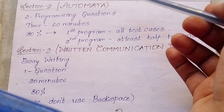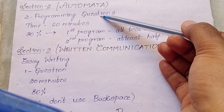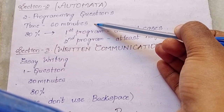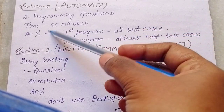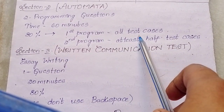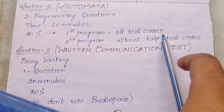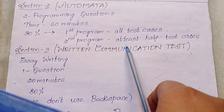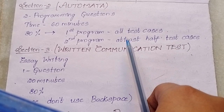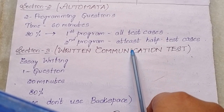When it comes to the coding section — Automata — two programming questions will be asked. 60 minutes is the time allotted and the cutoff is 80 percent. That means all test cases must be satisfied for the first program, and for the second program at least half the test cases must be satisfied. Please practice lots of coding questions.